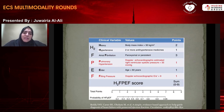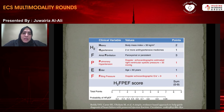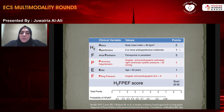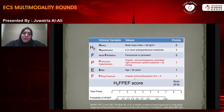The HFpEF score looks at the probability of a patient having heart failure with preserved ejection fraction. H stands for heavy and hypertensive — a high body mass index gets 2 points, being on 2 or more antihypertensives gets 1 point. Atrial fibrillation gets 3 points, pulmonary hypertension gets 1 point, age older than 60 gets 1 point, and elevated filling pressure by echo corresponding to an E to E prime greater than 9 gets 1 point. The sum gives a different probability of having HFpEF.